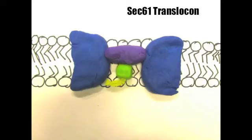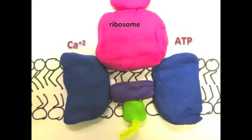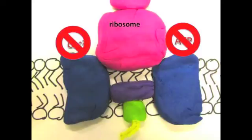The SEC61 complex is a two-dimensional channel that acts as a translocon to transport proteins across the membrane. It is composed of three subunits: SEC61 alpha, beta, and gamma. To ensure successful transport of the proteins, the complex is responsible for forming a tight bond with the ribosome. This bond prevents small molecules, such as ATP and calcium, from traversing the membrane.